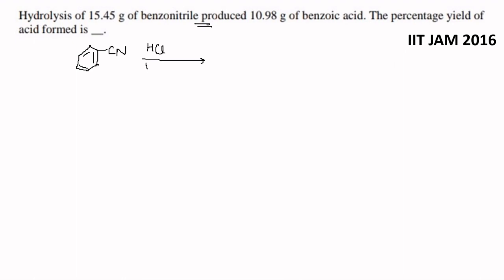Iske jab hum hydrolysis karte hain — agar iski hum acidic hydrolysis karenge, so yahan se there will be formation of benzoic acid. Isko hum likh sakte hain: C6H5CN, aur benzoic acid ko likh sakte hain: C6H5COOH.